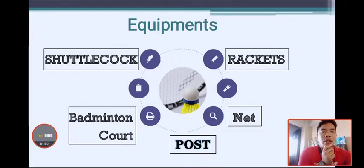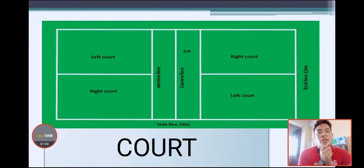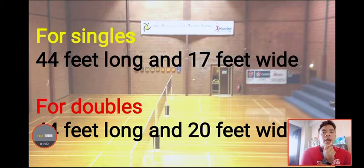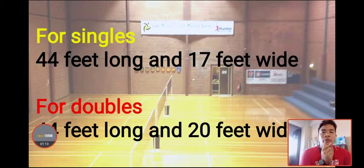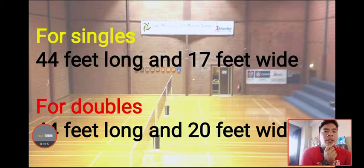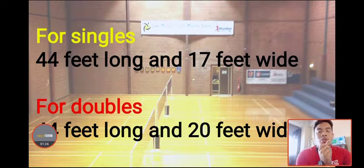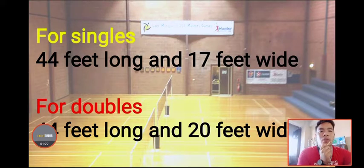The first type of equipment in badminton is the court. For singles, the court measures 44 feet long and 17 feet wide. For doubles, it measures 44 feet long and 20 feet wide.